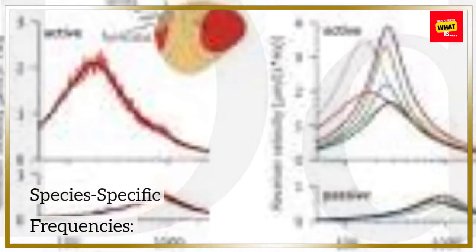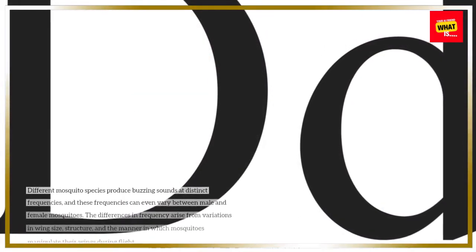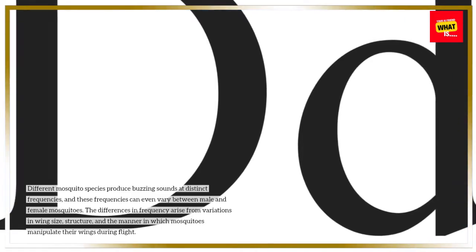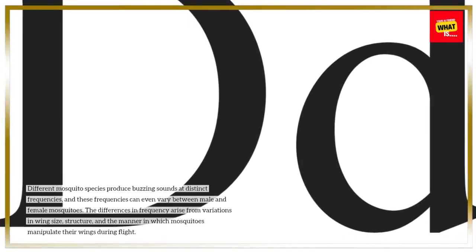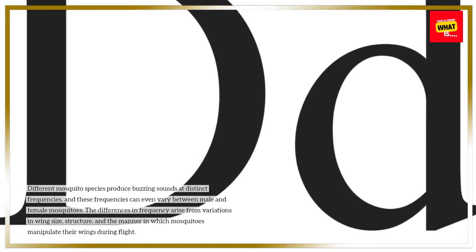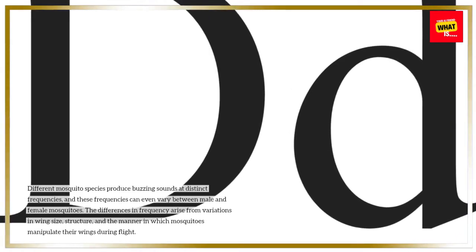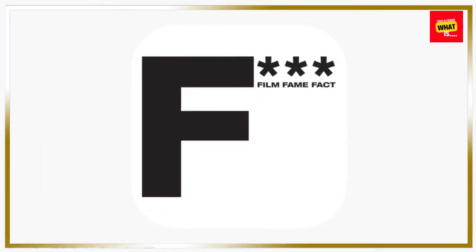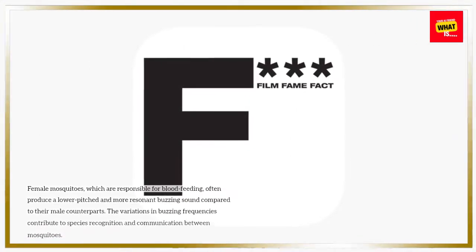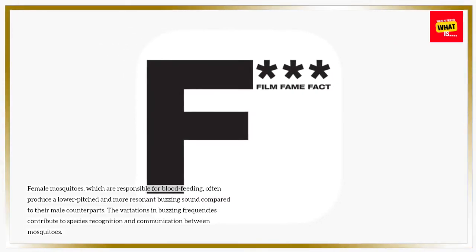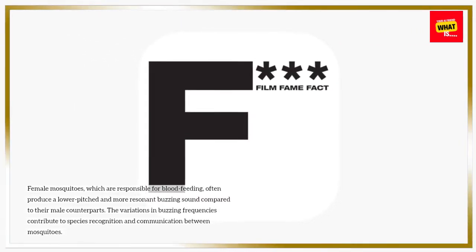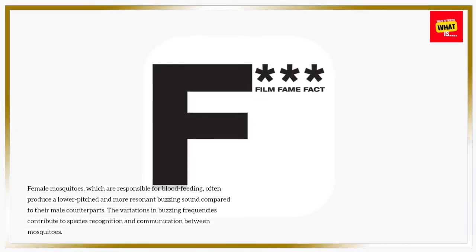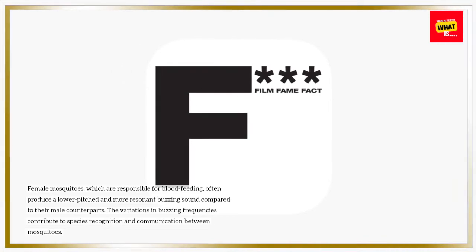Different mosquito species produce buzzing sounds at distinct frequencies, and these frequencies can even vary between male and female mosquitoes. The differences in frequency arise from variations in wing size, structure, and the manner in which mosquitoes manipulate their wings during flight. Female mosquitoes, which are responsible for blood feeding, often produce a lower-pitched and more resonant buzzing sound compared to their male counterparts. These variations in buzzing frequencies contribute to species recognition and communication between mosquitoes.